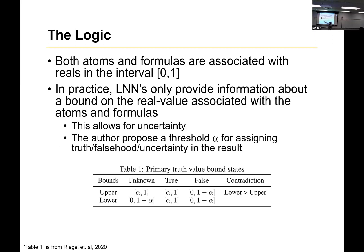The idea is that if you have an atom that's assigned alpha one, or a formula that's assigned alpha one, that means you're considering it to be true. And for evaluating error, that's really key, because all my things as alpha comma one — I want those to be as close to the ground truth as possible.